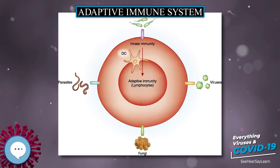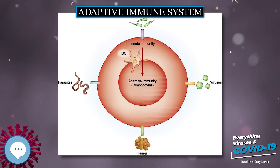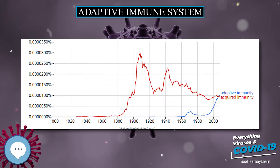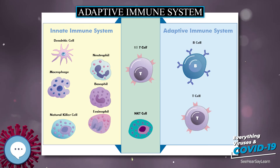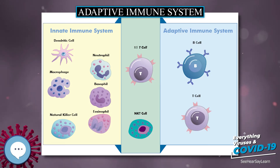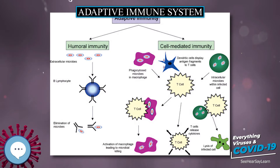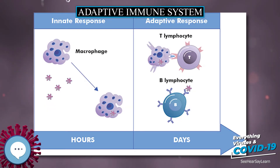Acquired immunity is triggered in vertebrates when a pathogen evades the innate immune system and: (1) generates a threshold level of antigen, and (2) generates danger signals activating dendritic cells. In humans, it takes 4 to 7 days for the adaptive immune system to mount a significant response.